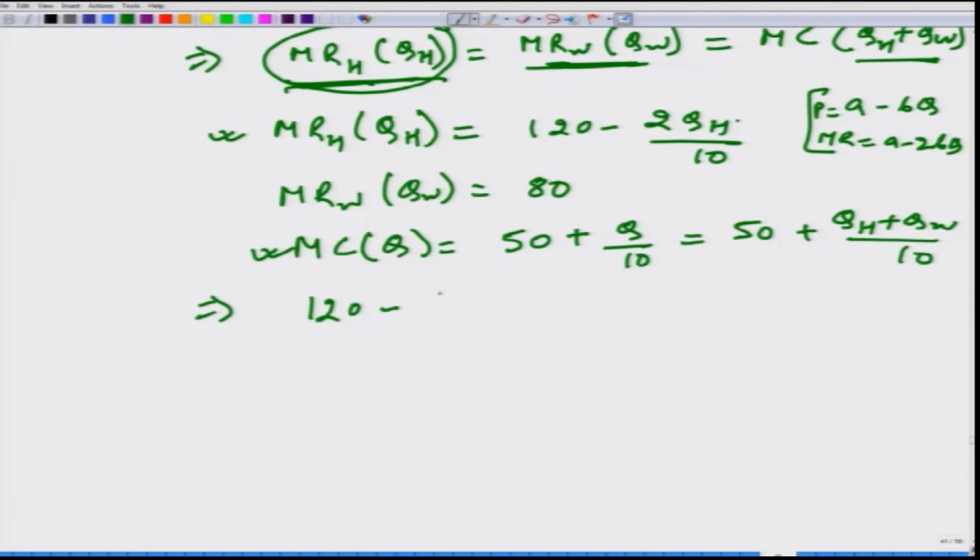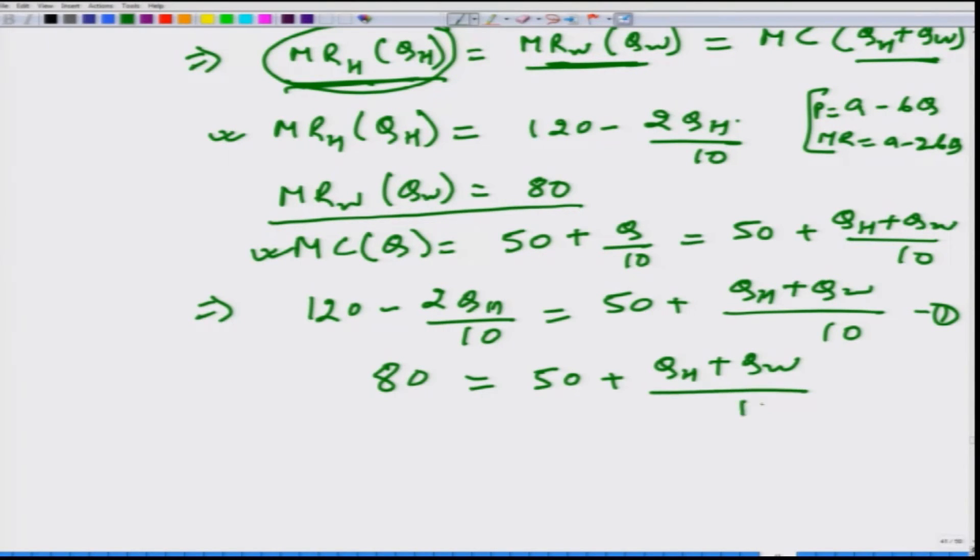120 minus 2 QH divided by 10 has to be equal to 50 plus QH plus QW divided by 10, this is one. And in the second, in the world setting the MR marginal revenue at QW which turns out to be 80 has to be equal to 50 plus QH plus QW by 10.